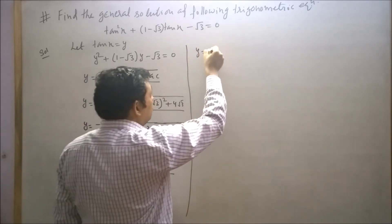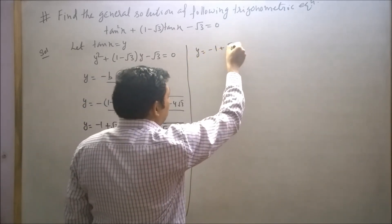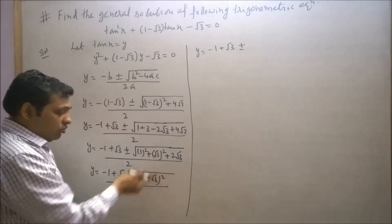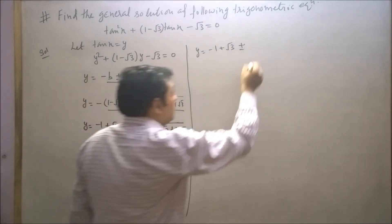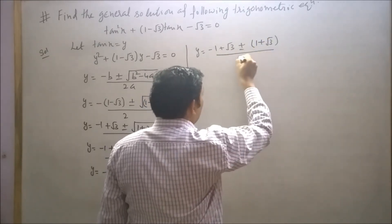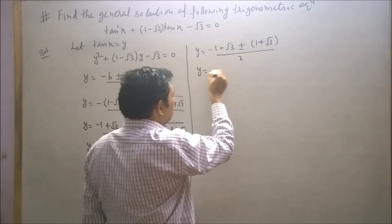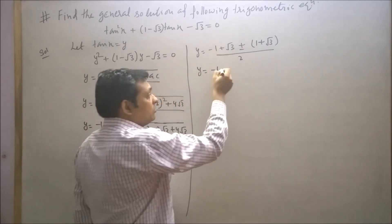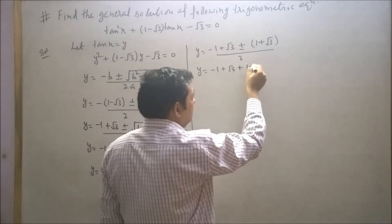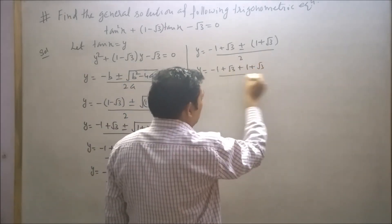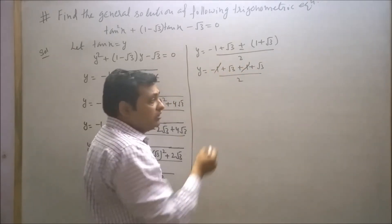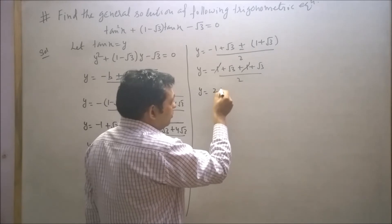So y equals [minus(1 - √3) ± (1 + √3)] upon 2. Taking the positive case: y equals (−1 + √3 + 1 + √3) / 2 = 2√3 / 2 = √3. So y equals √3.